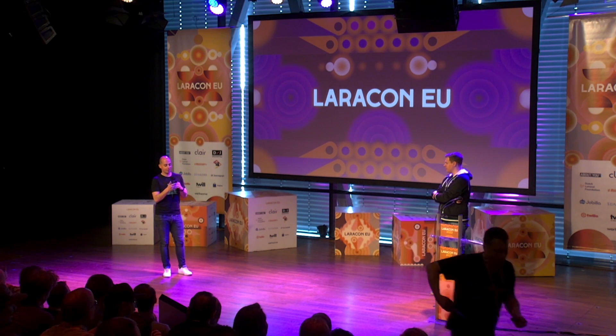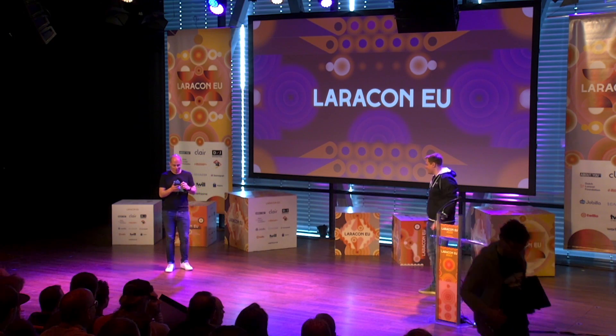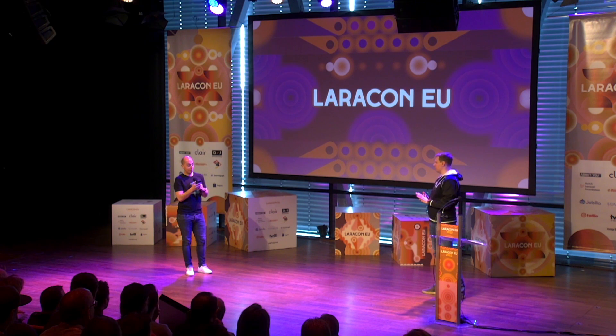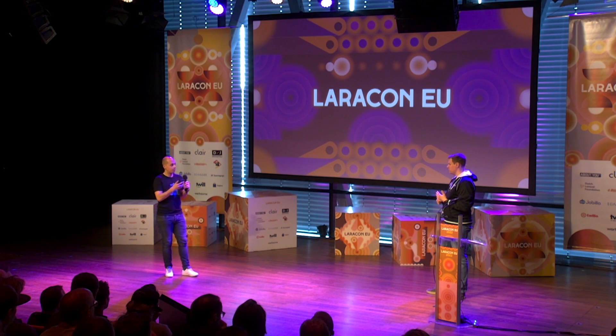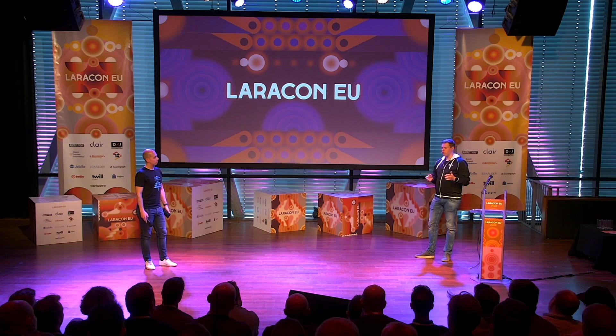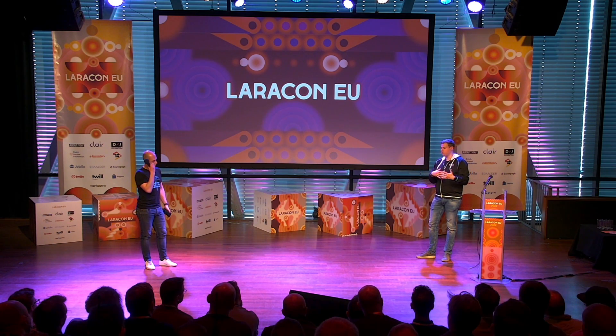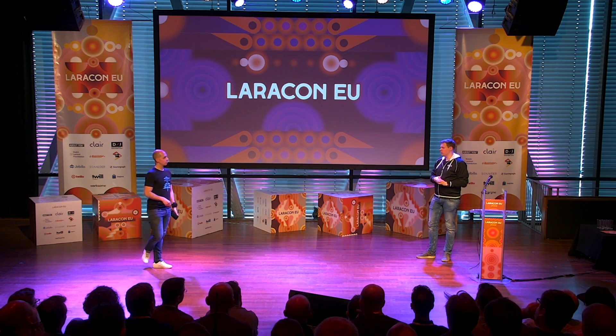Question from the audience: how do you strip personal data from request logs? If you convert a model to JSON, you can use the hidden attributes on the model — it works on all models, so that way you can already hide a lot of data. In a notification itself you're building up your own content, so you need to be aware of what you're putting in there. But from the listeners you can also strip out the data if you want to. For some parts of the framework you have to build your own solution — it's not included everywhere.